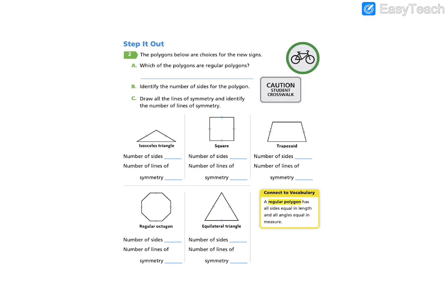So let's take a further look at this. The polygons below are choices for the new signs. Which of the polygons are regular polygons? Now if you don't remember that vocabulary, please pop down here. A regular polygon has all sides equal in length and all angles equal in measure. A good example of a regular polygon - the shape that I think of when I think of all sides equal is a square.